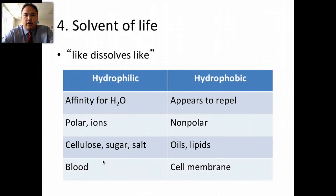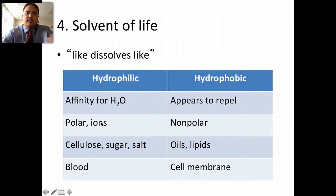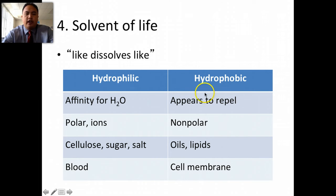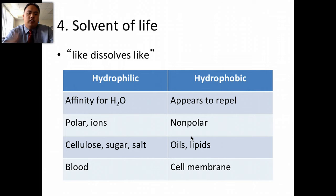They call water the solvent of life — it dissolves things; it's a universal solvent. The reason is because it's polar, so it has a positive side and a negative side. We talked about two vocabulary words: hydrophilic and hydrophobic. Hydrophilic means it has an affinity for water — it is polar. Examples are cellulose, sugar, and salt. Hydrophobic means it fears water — it repels, it's nonpolar. Examples are oils and lipids, specifically the phospholipids of a cell membrane. The heads of a phospholipid are hydrophobic and the tails are hydrophilic.